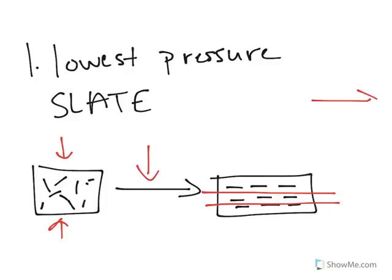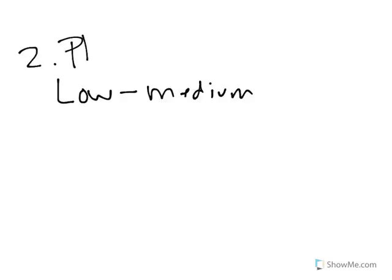Now, let's move on to the next pressure. So now let's move on to our second, and our second is going to be low to medium pressure. And at low to medium pressure, we're going to have a texture we're going to call phyllite.